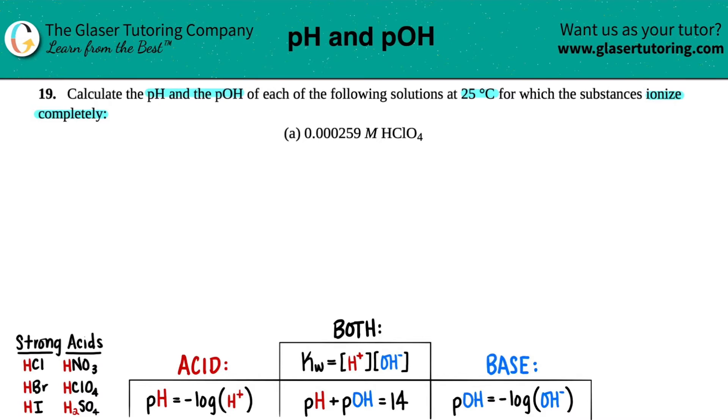So there are only three types of compounds that ionize completely: strong acids, strong bases, and salts.